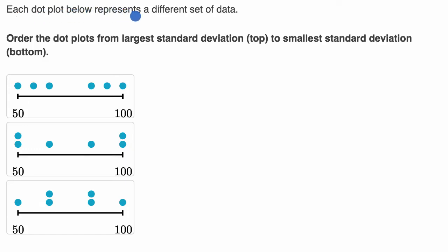Each dot plot below represents a different set of data. We see that here. Order the dot plots from largest standard deviation top to smallest standard deviation bottom.